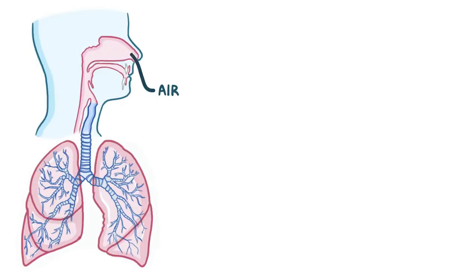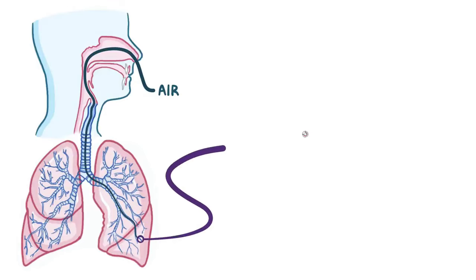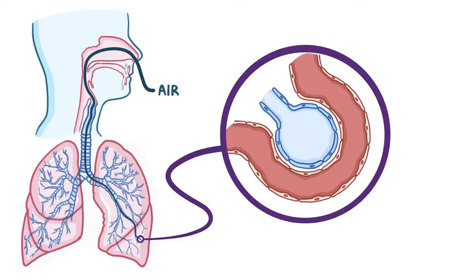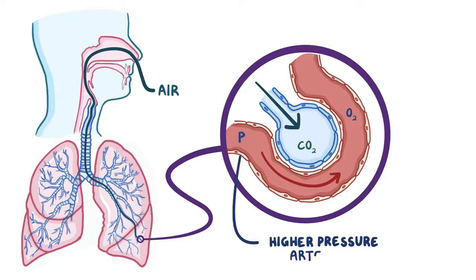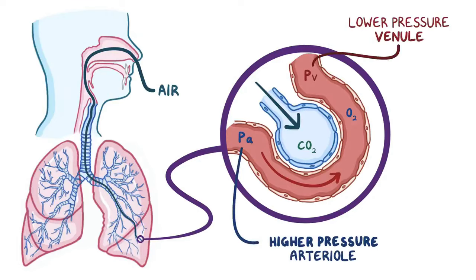Air from the environment enters through the nostrils, goes through the airways, and finally reaches the alveoli, which are the tiny air-filled sacs in the lungs. Here, gas is exchanged between the alveoli and the blood flowing through the capillaries that surround each alveolus, and blood flows from the higher-pressured arterial to the lower-pressured venule.